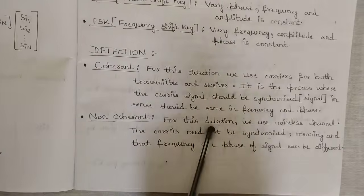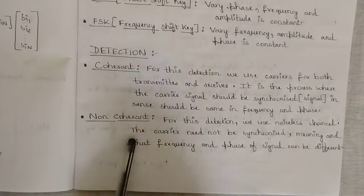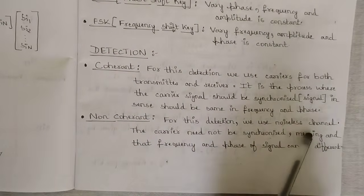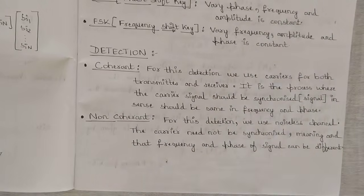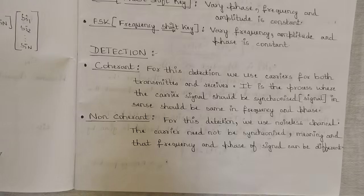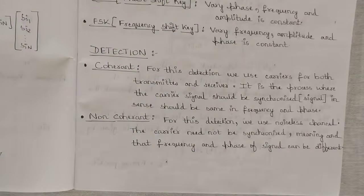In non-coherent detection, a noiseless channel is used and the carrier need not be synchronized — the frequency and phase of the signal can be different. Detection still happens at both the transmitter and receiver end, but the phase and frequency may or may not vary, and we cannot predict that. This is the main difference between coherent and non-coherent detection.